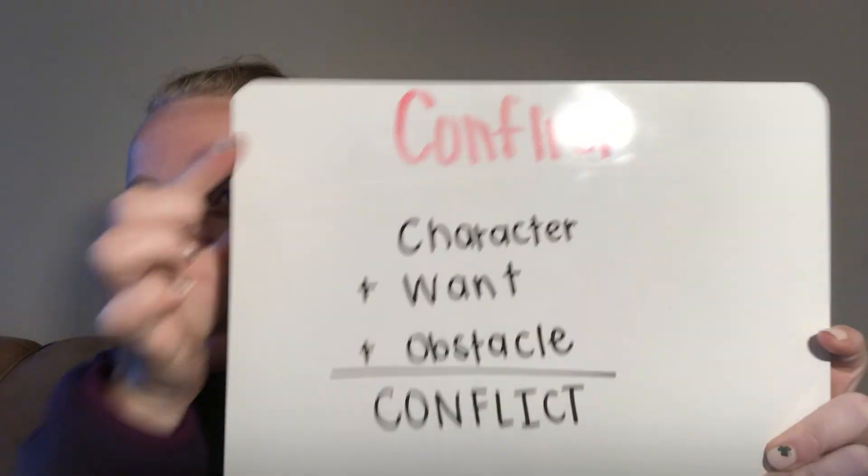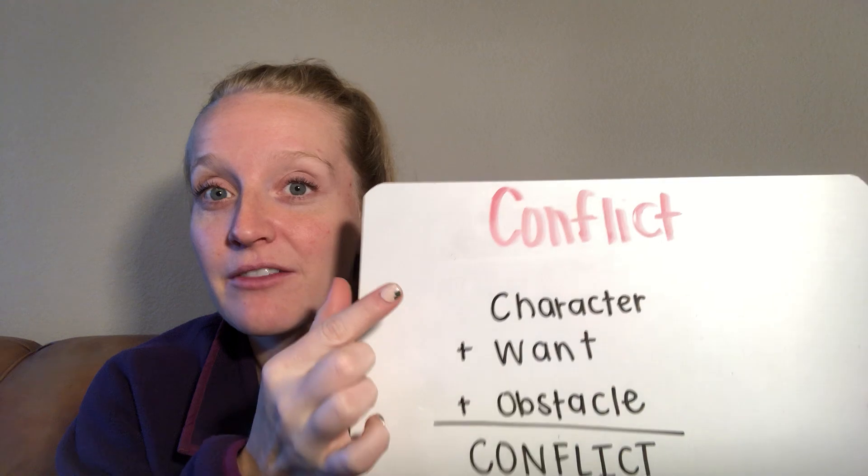I wanted to really quick touch on what conflict is. We've talked about it a little bit but it's been a while. So a conflict is any struggle, disagreement, or obstacle that's causing tension or a problem. Conflict could also be like a problem. I broke it down to an equation, throwing in some math here. A conflict is something that stands in the way of a character and their goals. So we have a character, their want, and an obstacle.